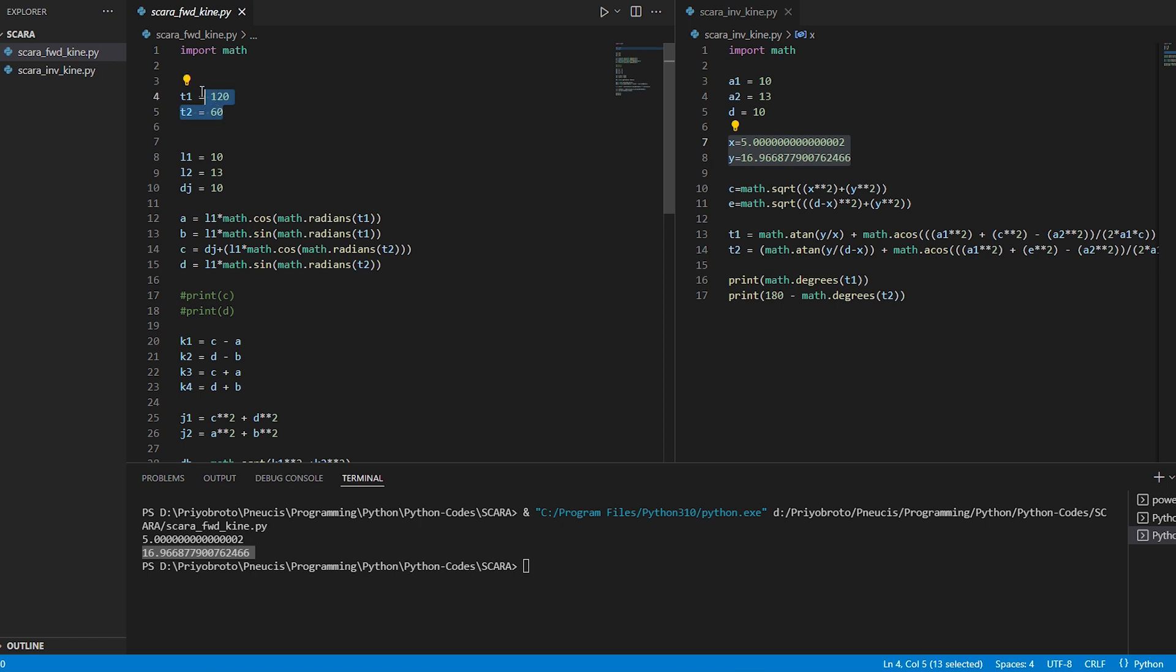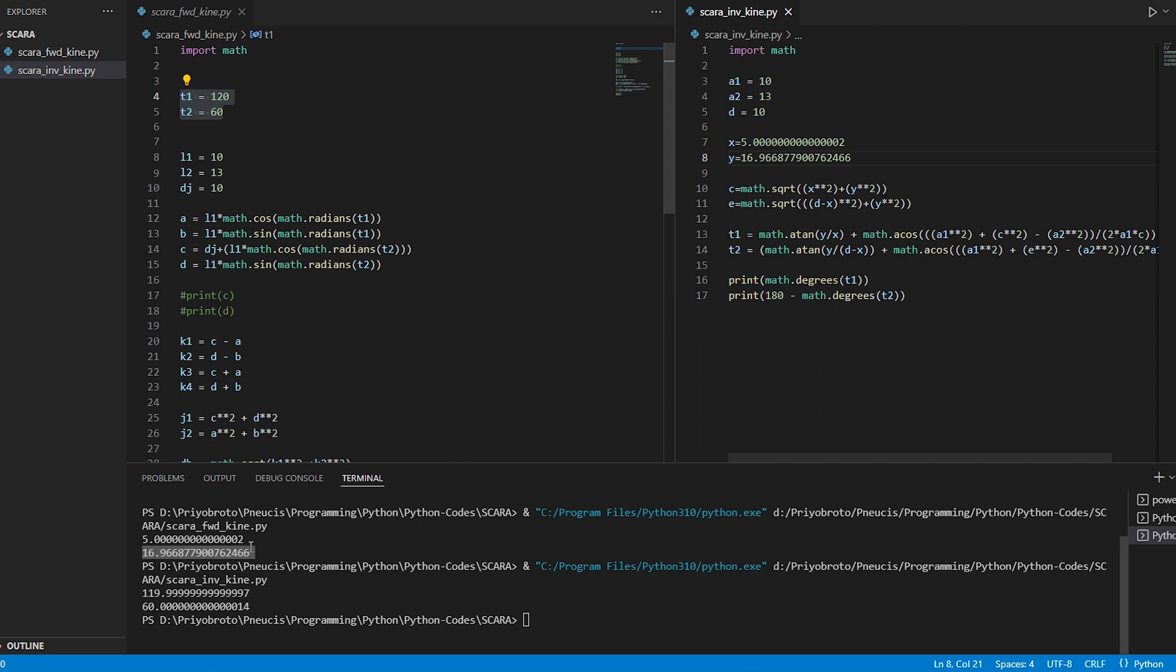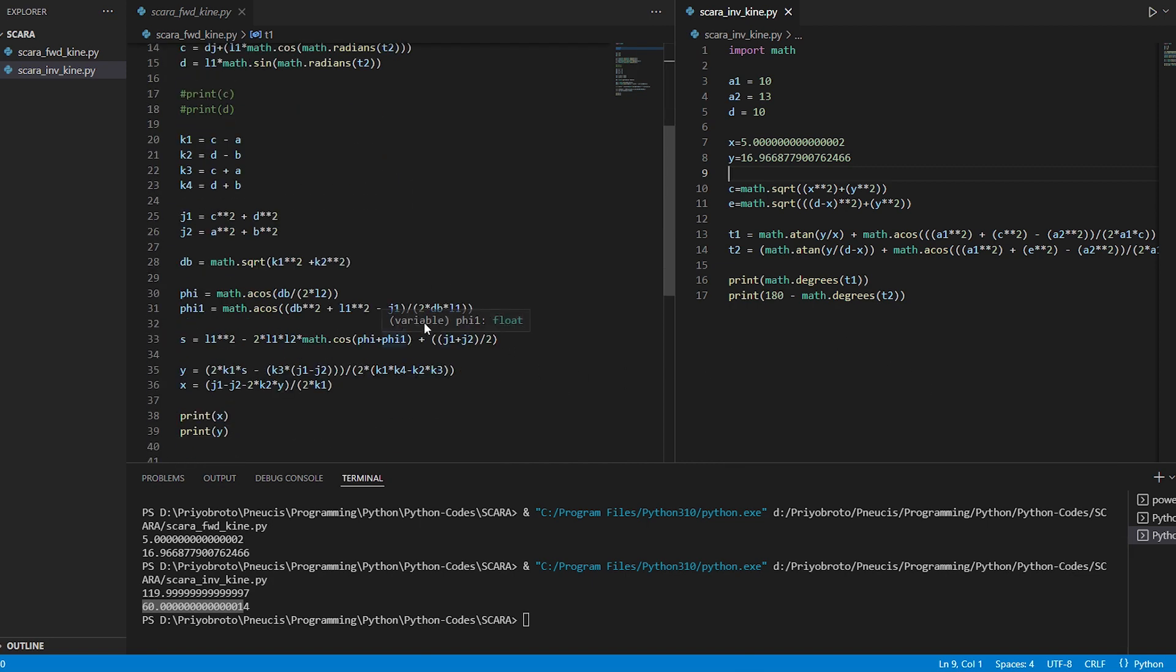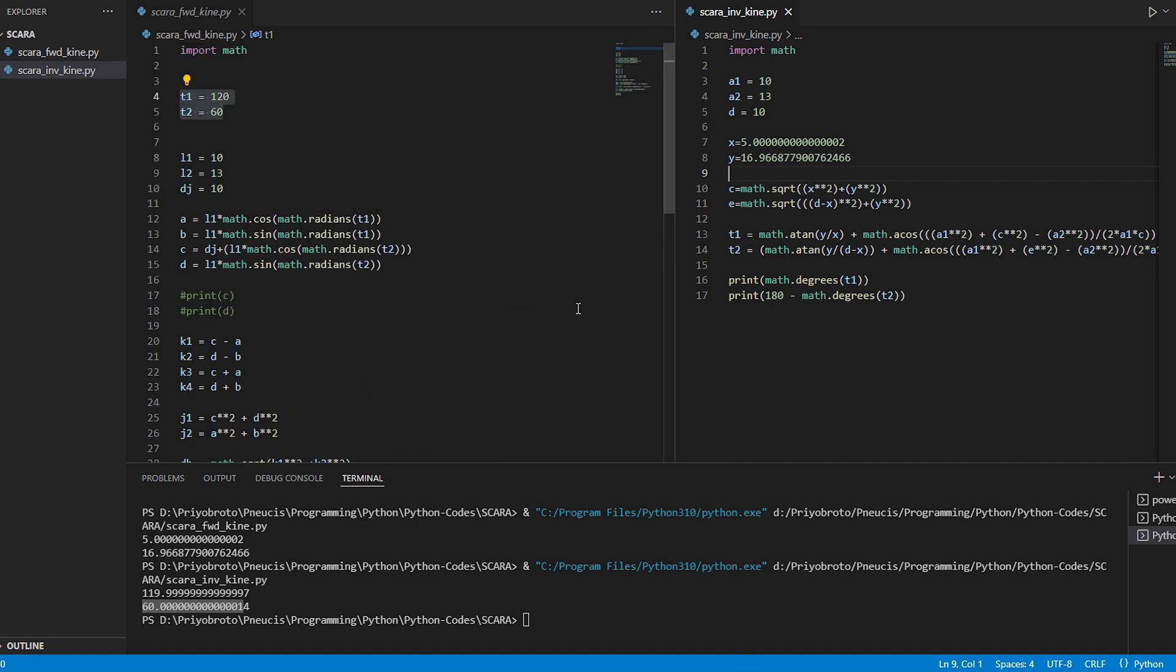So now let's run the inverse kinematics and see if we can get the same angles. As you can see, this is 119.999, it is almost 120 degree, and the other angle is 60 degree. So we have tested and you can see that the forward and inverse kinematics are working exactly as they're supposed to work. So that's all about the kinematics.